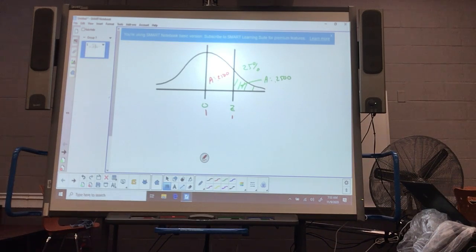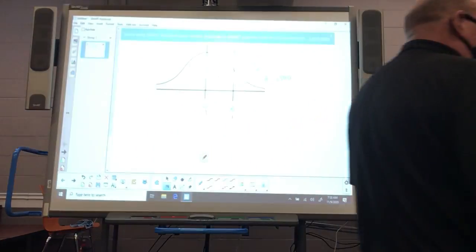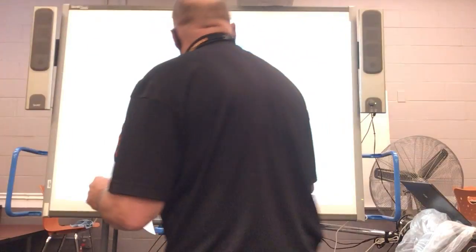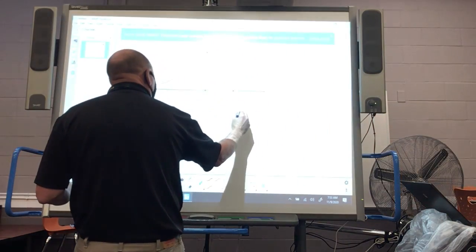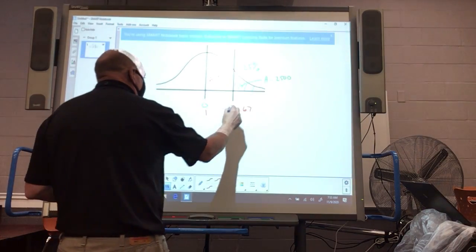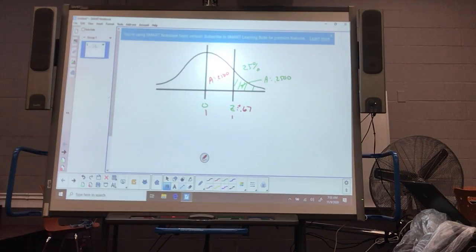I'm looking at all the numbers within the table. Which one's closest to 0.2500? Now it's not going to be exact, but you can get one that's close enough to it. Nehemiah, what's the z-score for that? 0.67, and this is on the right so it's a positive 0.67.